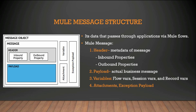The metadata of the message is represented by two properties: inbound properties and outbound properties. Inbound properties are immutable properties automatically generated by the message source — they cannot be tampered with by any user. The scope of inbound properties is limited to a flow, so when a message passes from one flow to another, all inbound properties of the previous flow disappear. Outbound properties contain metadata similar to inbound properties but with differences — they are mutable and can be set during the course of a flow by the user or Mule, and unlike inbound properties, outbound properties can be passed from one flow to another using message transformers.